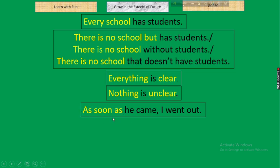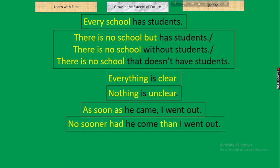Next: 'As soon as he came, I went out.' If an affirmative sentence begins with 'as soon as,' the negative form starts with 'No sooner had' + subject + past participle, then 'than' (replacing the comma). Rule: as soon as + subject + past tense → No sooner had + subject + V3 + than + other clause. Example: 'No sooner had he come than I went out.'